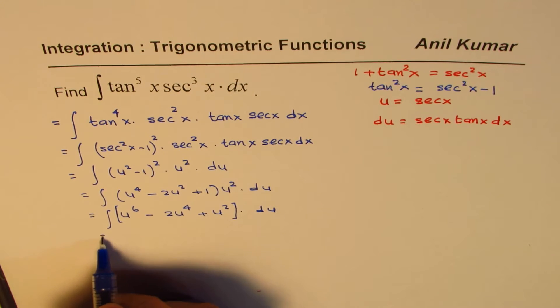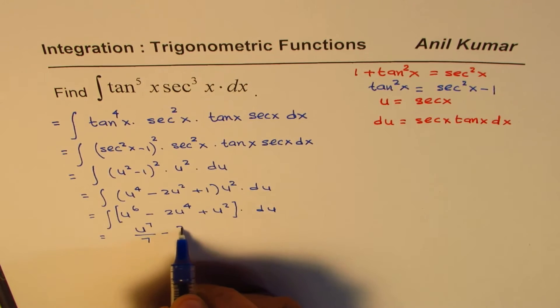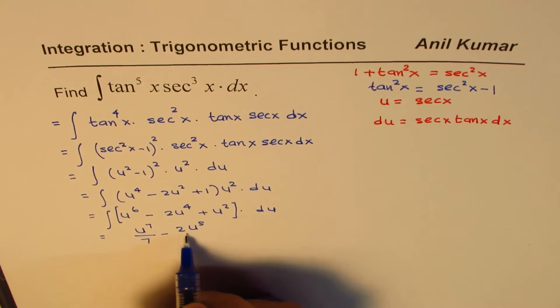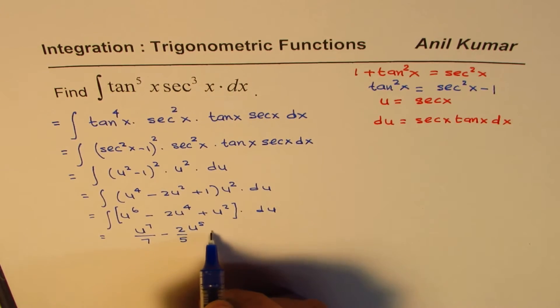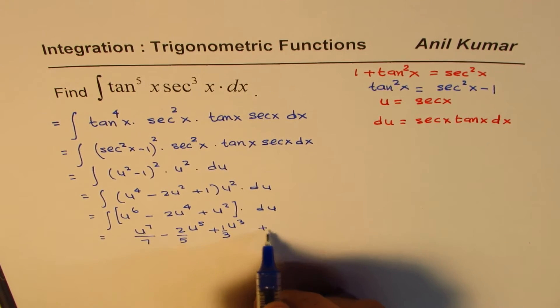And now we can write the integral which is u to the power of 7 over 7 minus 2 times u to the power of 5 over 5 plus u cube 1 over 3 plus c.